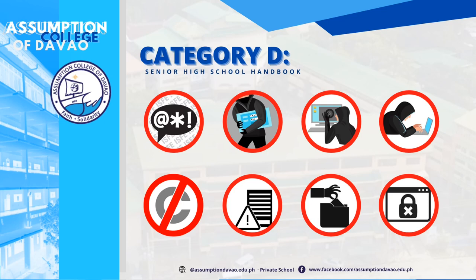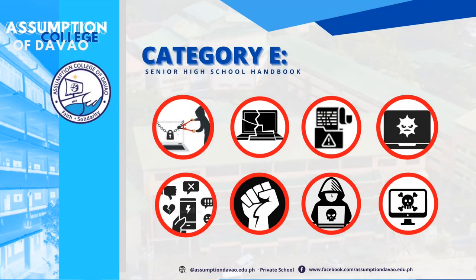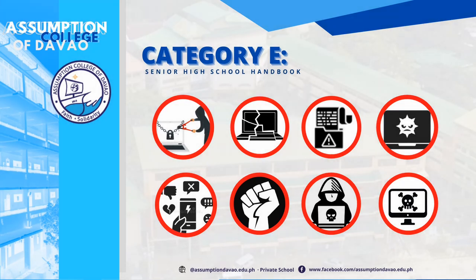Number 10: Recording any class session and transmitting it without permission. For Category E, Number 1: Attempting to break into the computer system of ACD, another organization, or a person. Number 2: Sending or posting messages that disparage ACD or another organization's products or services. Number 3: Passing off personal views as representing those of ACD. Number 4: Engaging in any other illegal activities.